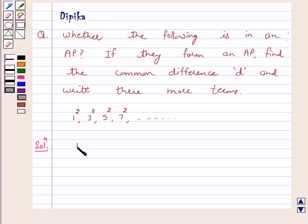The given list of numbers is 1 square, 3 square, 5 square, 7 square and so on. We have